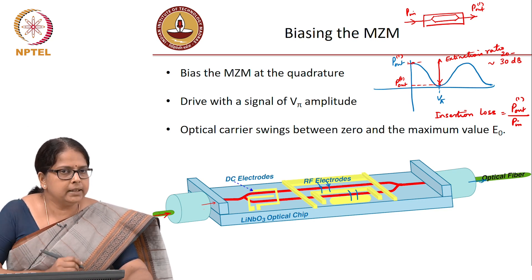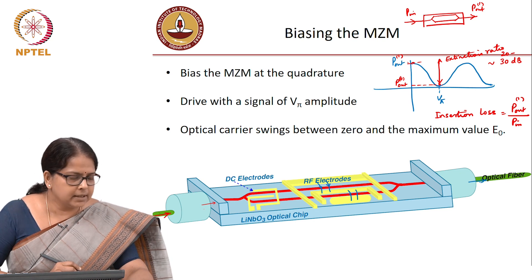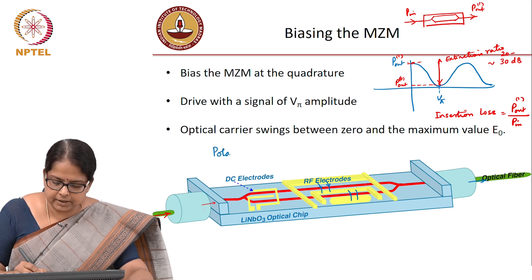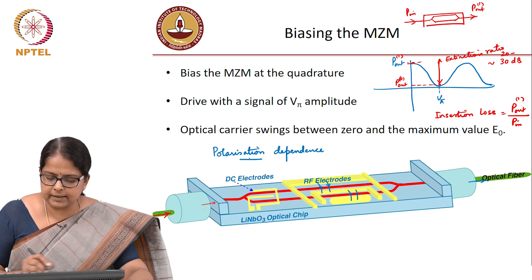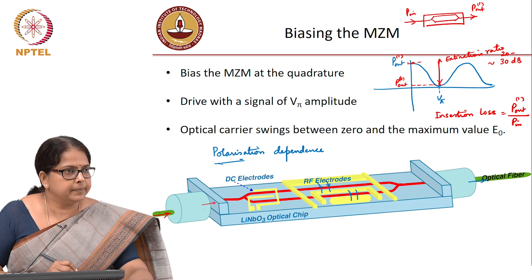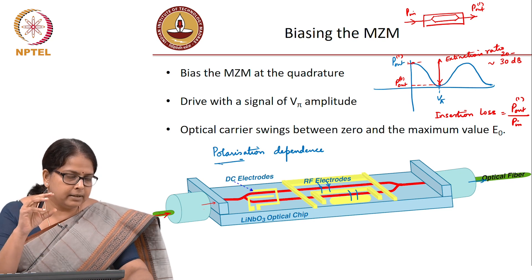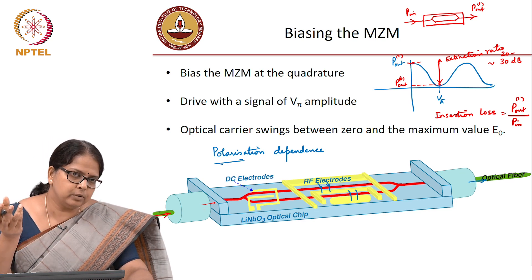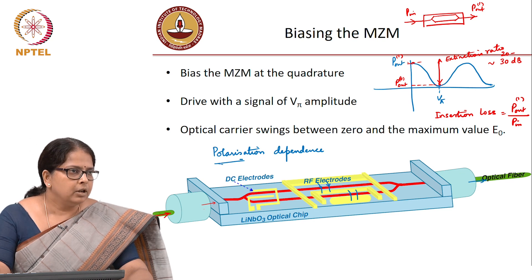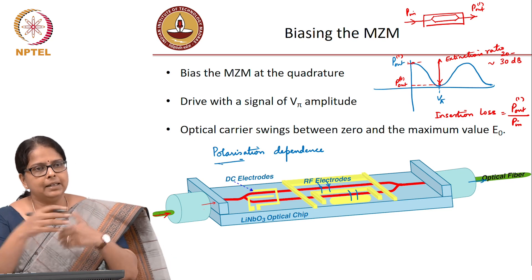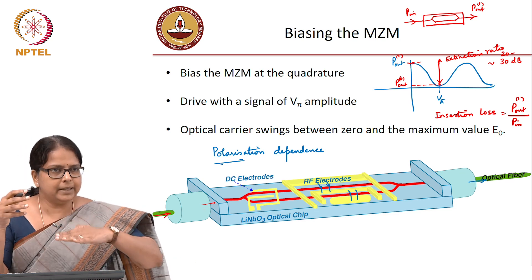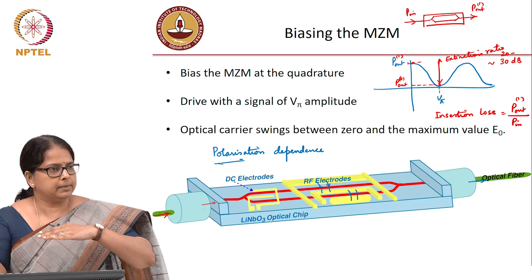One critical thing we are not going to discuss in detail is polarization dependence. Typically, the electro-optic effect itself is polarization dependent — the phase change produced for different input polarizations is different. So typically when a modulator is constructed, the crystal is cut in such a way that for a particular input polarization, the electro-optic effect is maximum.